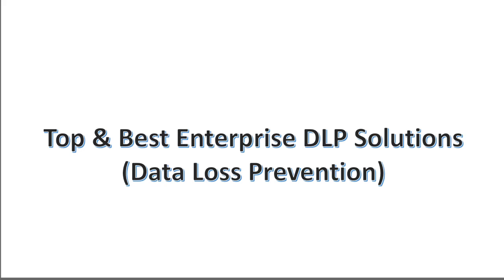In this video we're going to talk about the top and best enterprise DLP solutions. DLP, or data loss prevention solutions, are the type of solutions that help you to control mainly structured data like files, documents, pictures, PDF files, and so on. They make sure you can control how those documents are being used or transferred, and you can create specific policies around that — like if there is any PII or PHI data in those documents, how to treat them and who is allowed to access them.